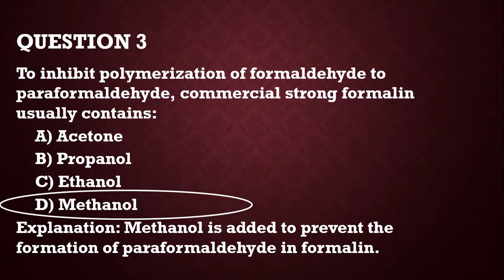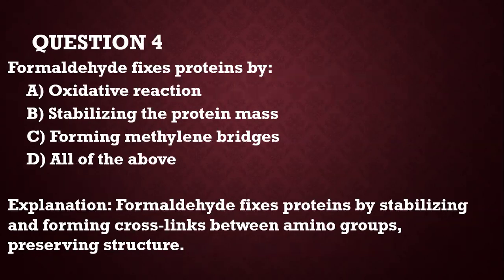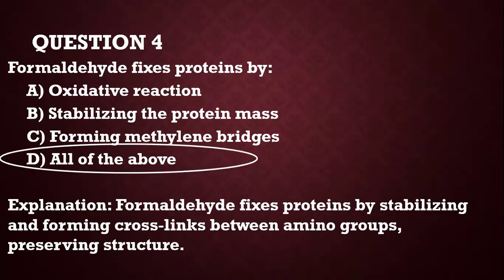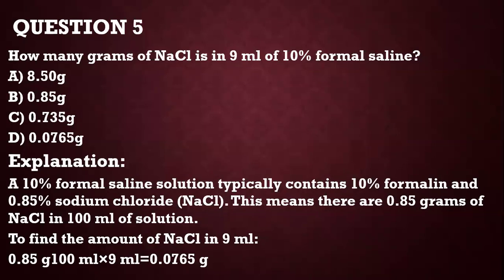Question number 4: formaldehyde fixes protein by oxidative reaction, stabilizing protein mass, and forming methylene bridges — all of the above is correct. Question 5: how many grams of NaCl is in 9 mLs of 10% formaldehyde? You should know that 10% formaldehyde contains 0.85 grams of sodium chloride per 100 mLs. So, 0.85 over 100 times 9 gives you 0.0765 grams. That's your answer.